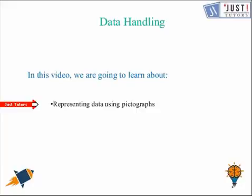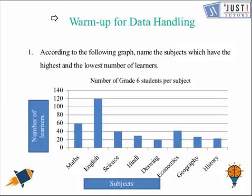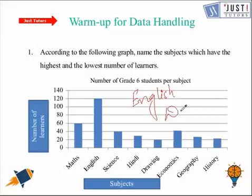Before moving ahead, we'll try one question. Here's the question for you. To try the question, you can pause the video. So basically, in this question, you need to find the name of the subject which has the highest and the lowest number of learners. So the answer for the same is the highest number would be in English, and lowest number would be in drawing.